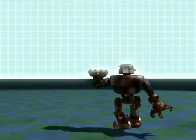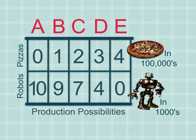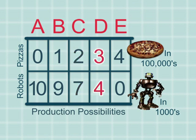Imagine a fictitious economy that makes only two goods: pizzas and robots. This economy's only two goods are put on a table, which represents the trade-off between them. Devote all of this simplified economy's resources to making robots, and it can make 10,000 of them — but that means no pizza. Making just one pile of pizzas means making fewer robots, and as more pizzas are made, the possible number of robots is further reduced, down to a situation of all pizzas and no robots at all.